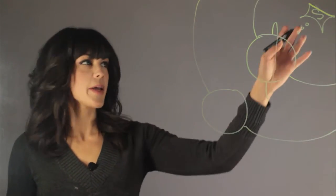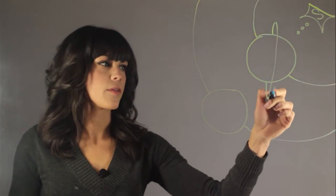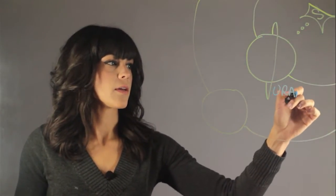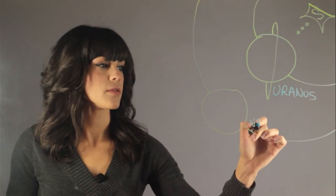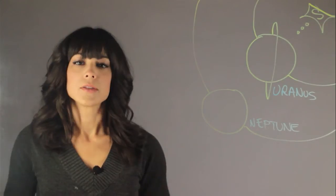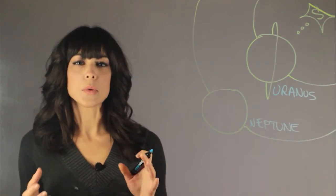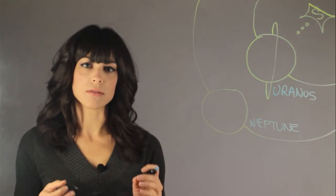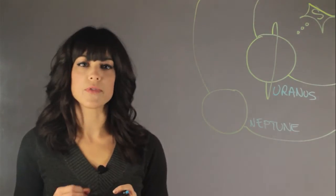So here we have the Sun and here we have Uranus and here we have Neptune. So what color are they? Uranus has a blue and greenish color to it and Neptune is very bright blue.